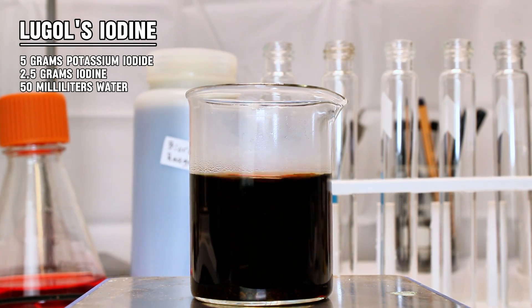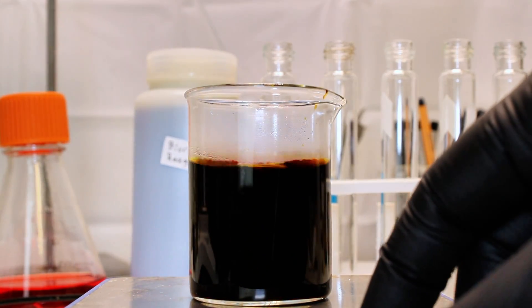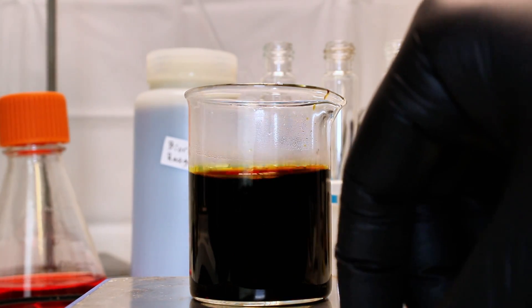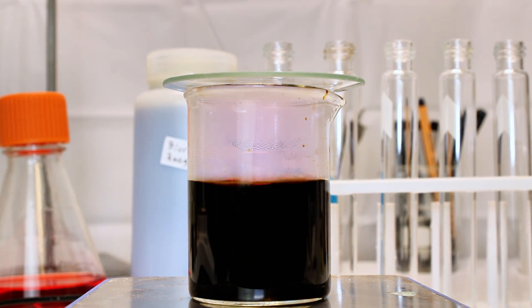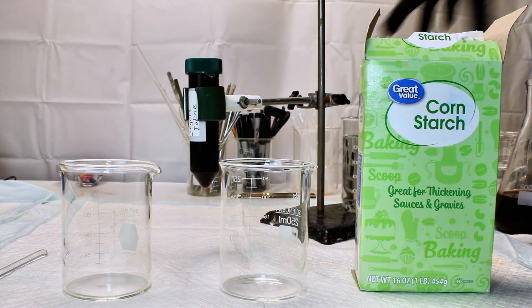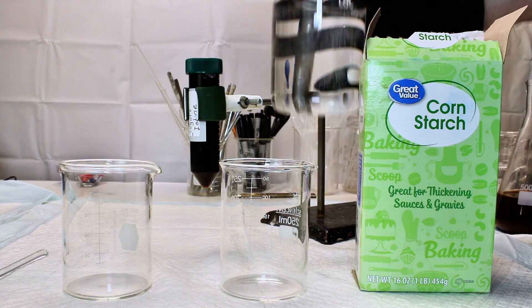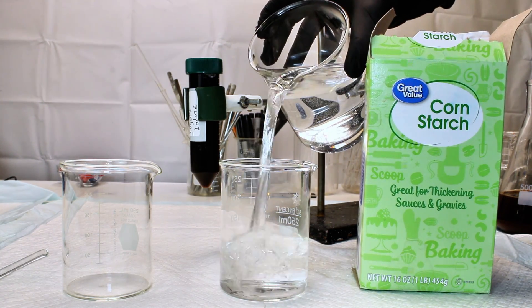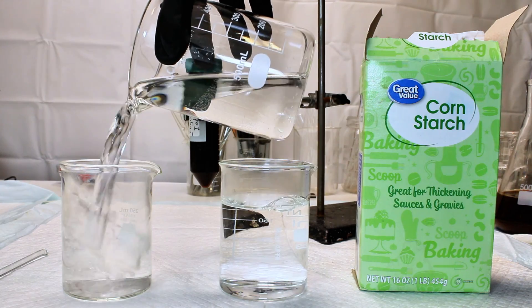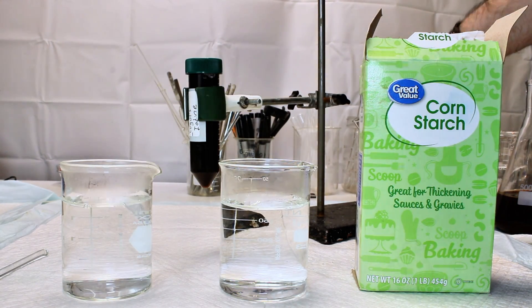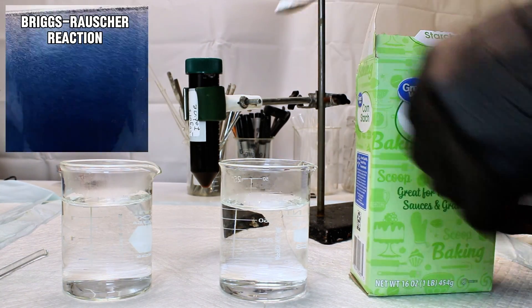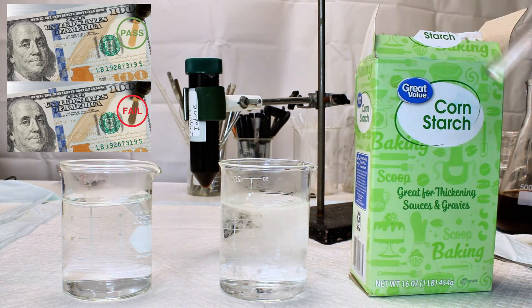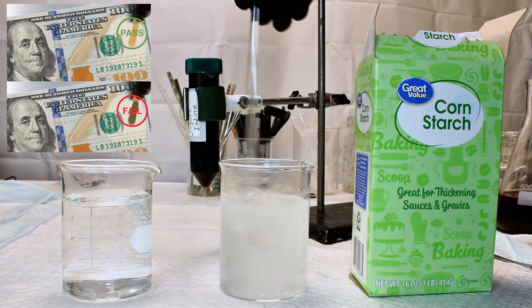This produces a solution where the reactive triiodide ion dominates in equilibrium with free iodine, which makes this solution incredibly useful in various medical applications. However, the way this solution works for my applications here today is that when triiodide reacts with starch, it forms a very, very dark blue complex. This complex does not form if only iodine or iodide is present, which is the basis for iodometric titration and the Briggs-Rauscher oscillating reaction. This principle is also used to detect counterfeit currency, as US dollars do not contain starch, while most regular paper does.